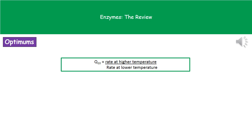This effect of temperature on the rate of reaction can be summarized with what's called the Q10. Q10 simply equals the rate at the higher temperature divided by the rate at the lower temperature. It's very unlikely to come up in an exam, but it's good to know in case it's a one-mark question.